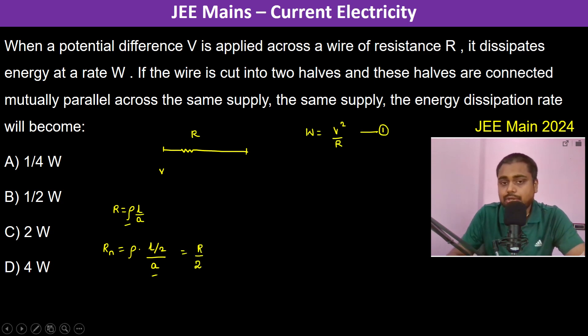Now it is cut into two halves. For each half it's R/2, and these halves are connected in parallel across the same supply. So we have R/2 and R/2 connected through the same supply V.